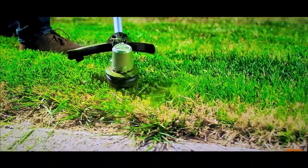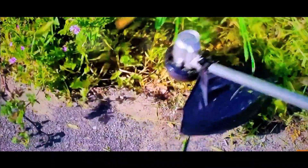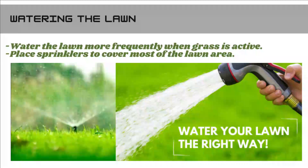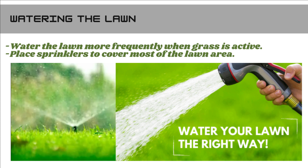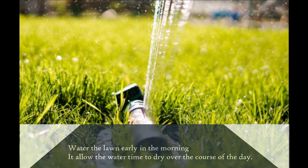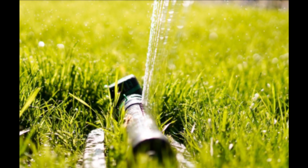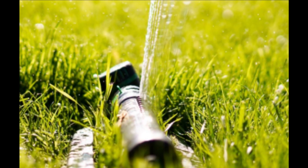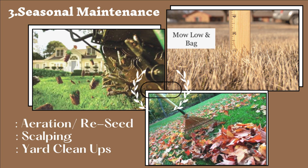Blow or rake up excess grass clippings and fallen leaves always from the yard area. Watering the lawn is another essential task to maintain healthy grass. Water the turf more frequently and deeply, early in the morning if possible. Watering in the early morning allows the water time to dry over the course of the day. The third topic of lawn maintenance is seasonal practices, which includes aeration, scalping, and yard cleanup.